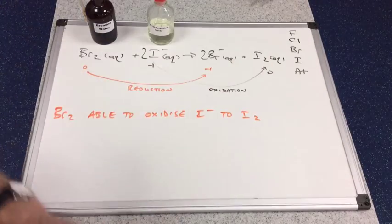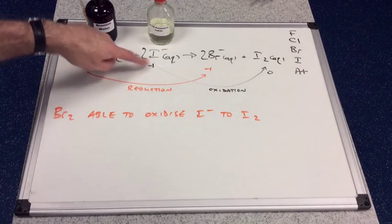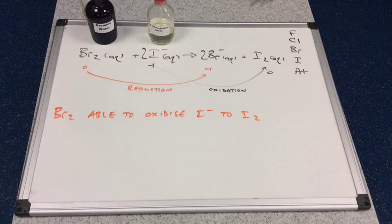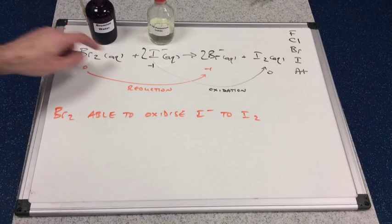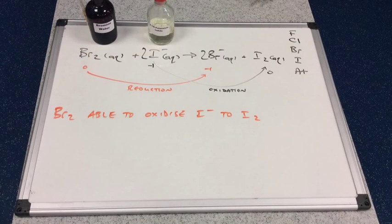And here's the oxidation process. Minus one up to zero, so it's obviously lost an electron for that change to take place. Bromine is the oxidizing agent because it's taken this electron away from the iodide.